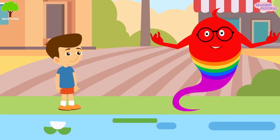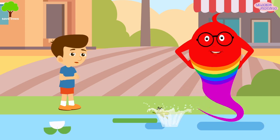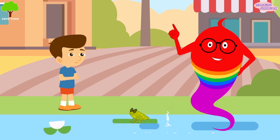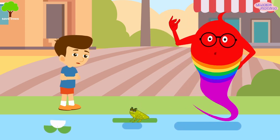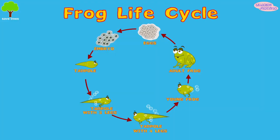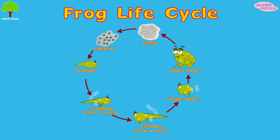Their life cycle is complex. Let's see the life cycle of the commonly found amphibian, the frog. Here are the stages: egg, embryo, tadpole, tadpole with two legs, tadpole with four legs, young frog, and then the final stage, an adult frog.